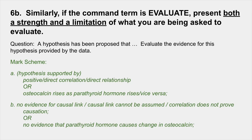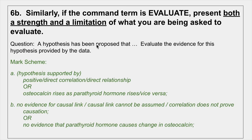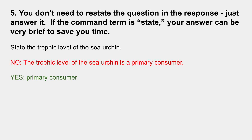Similarly, if the command term is 'evaluate,' you need both a strength and a limitation of whatever you're asked to evaluate. For example, 'evaluate the evidence for this hypothesis provided by the data' — first identify a positive or negative correlation, but then make sure you include a limitation. A common limitation is that the correlation does not prove causation. In science we never say we've absolutely proved anything — we can identify a correlation but can't say one variable necessarily causes the other.